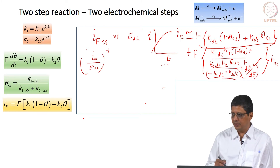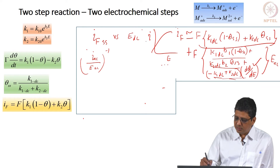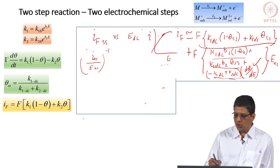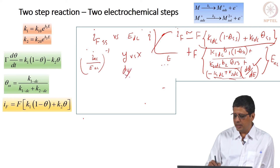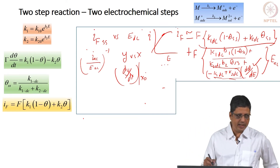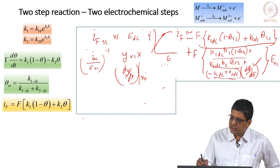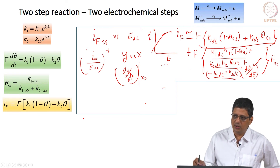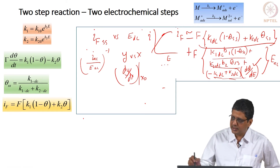The faradaic impedance at zero frequency is going to equal the slope of the DC current-potential curve — like dy/dx at a point x0. So I have expressions for both the faradaic impedance and the faradaic current I_AC. But I_AC at omega equal to 0 is not the same as I_DC.